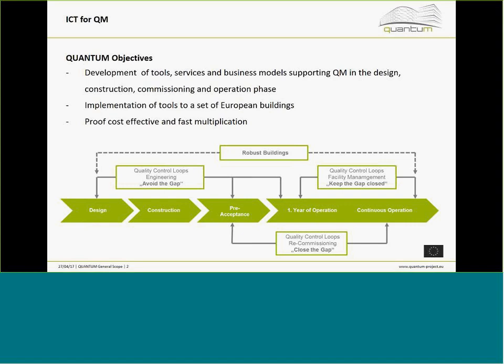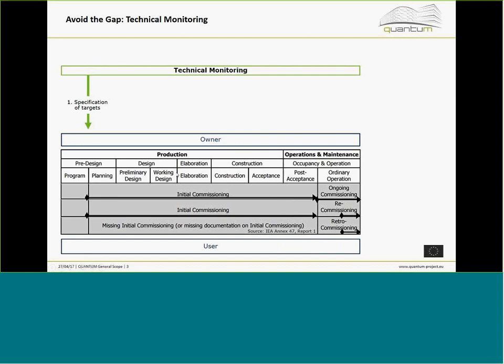I would like to show you one process we are working on very intensely: technical monitoring. This graph describes how commissioning is part of a project's path. Technical monitoring addresses one specific point that is part of many certification schemes — it is intended as a process to specify and evaluate target values for buildings. You start with a specification of targets, as we have heard.